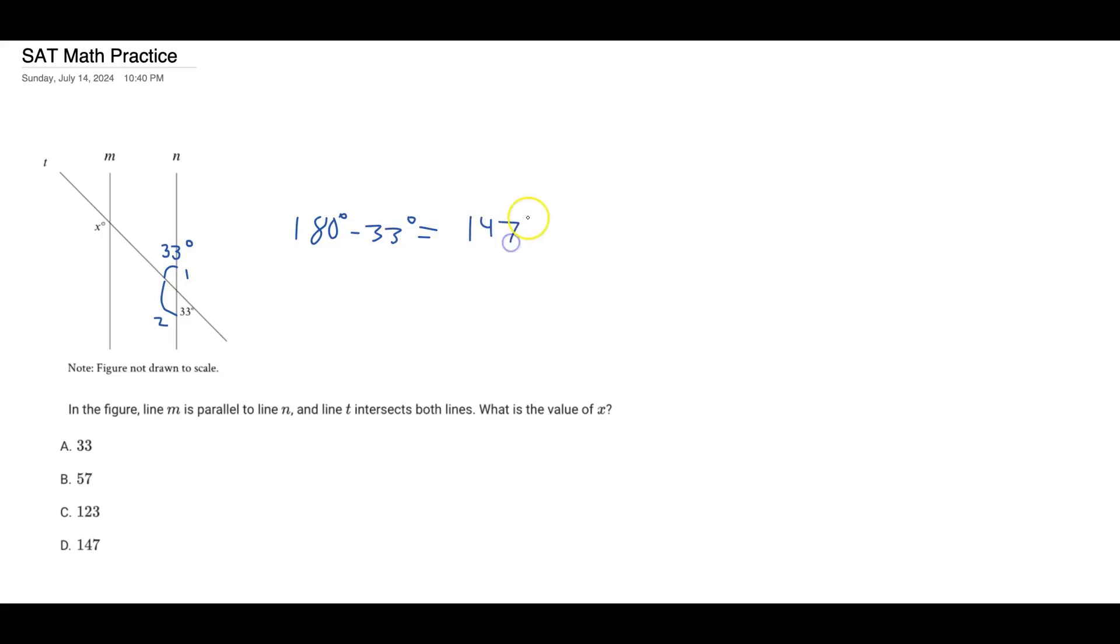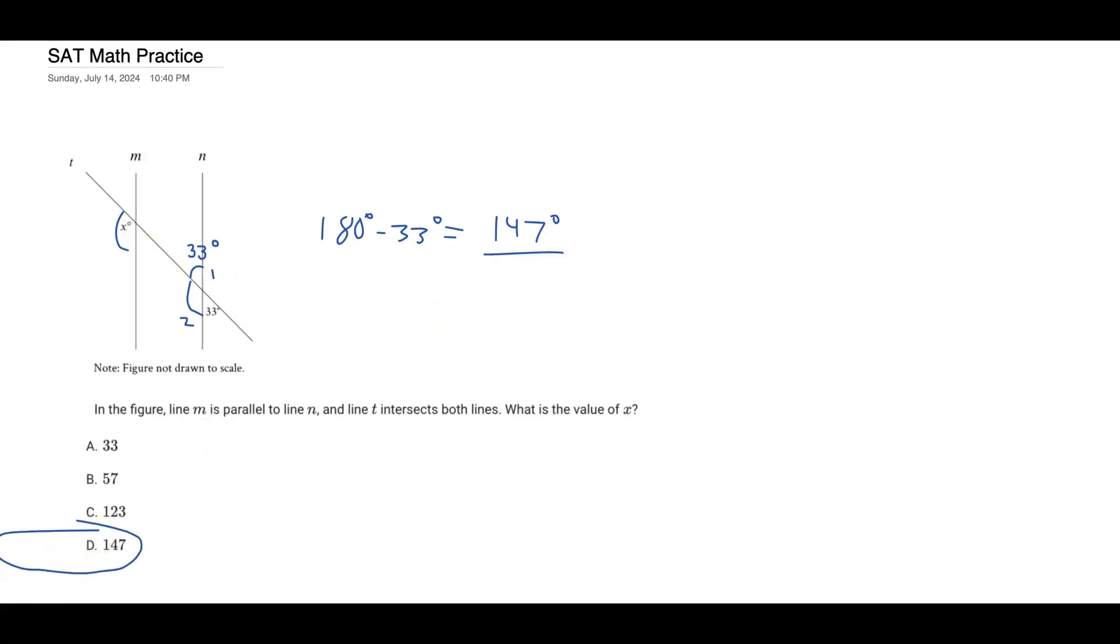And this is helpful because we have two parallel lines cut by a transversal. And so we have our corresponding angles, angle two that we have here and angle X here, they are corresponding angles. And so they will have the same angle measure. And so since we know angle two is 147 degrees, X is also going to be 147 degrees. And so our answer choice is D.